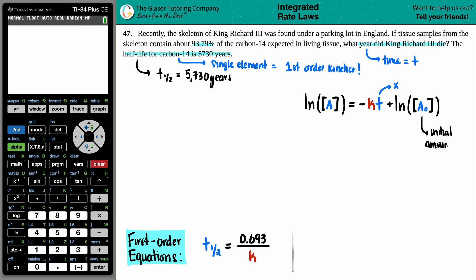Now, initial amounts and final amounts, these could be in different units. You could talk about it in terms of percentages, fractions, grams, moles, molarity. But in this case, they said if the tissue samples from the skeleton contain about 93.79 percent. We're talking about percents here. And what is always the initial amount of any percentage? What's the starting full percentage? Yeah, you got it. It's always going to be 100%.